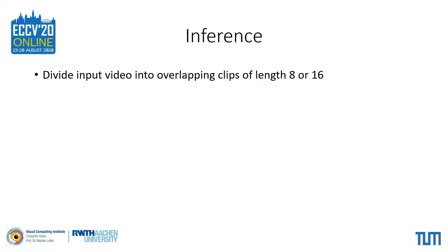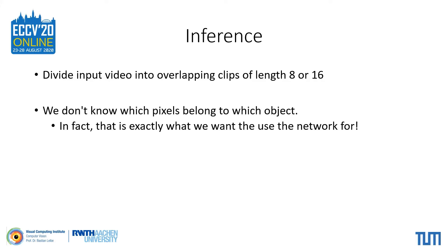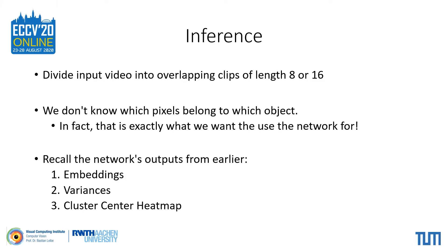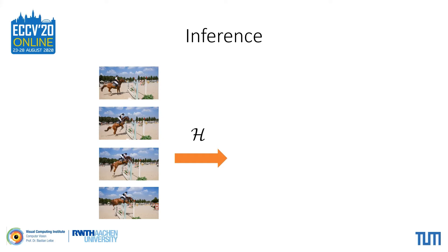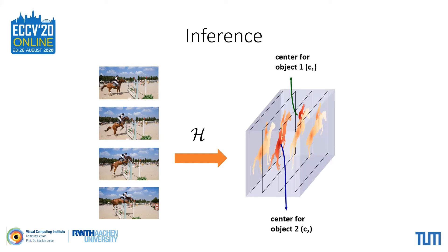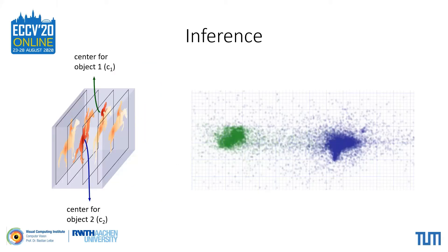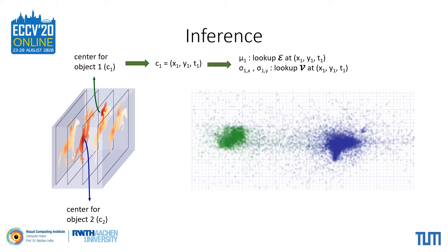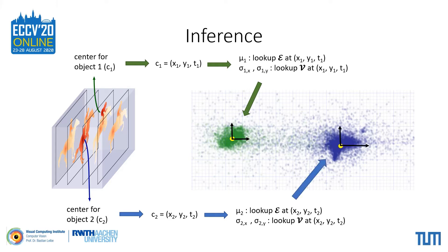For inference, we divide an input video into overlapping clips. Here we don't know which pixels belong to which object, so we cannot compute the cluster parameters the same way as during training. But recall that in addition to embeddings and variances, our network also produces a cluster center heatmap, and this is used during inference. For each pixel belonging to an object, the value of this heatmap reflects the probability of that pixel being the center of that object. So for a given video clip, we will have a peak in the heatmap for each object. The cluster parameters are then calculated by looking up the coordinates of an object center; the mean is assumed to lie at the embedding at these coordinates, and the variance of the cluster is the variance value at the same coordinates. Repeating this process sequentially allows us to segment an arbitrary number of object instances.